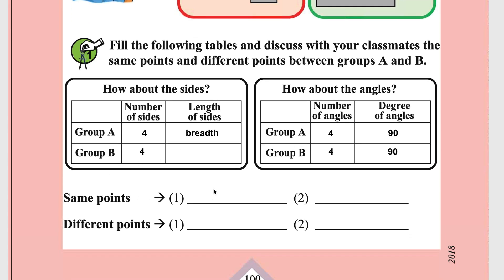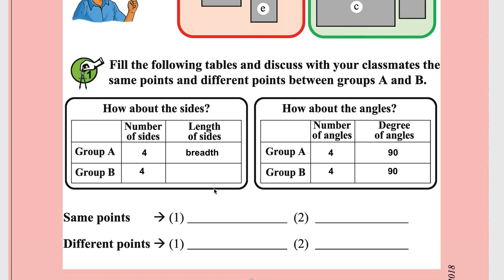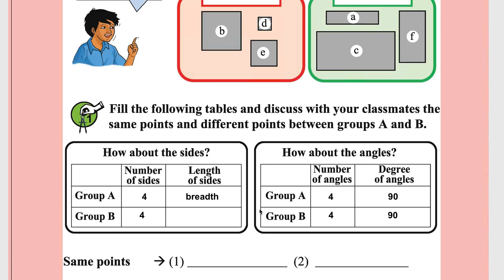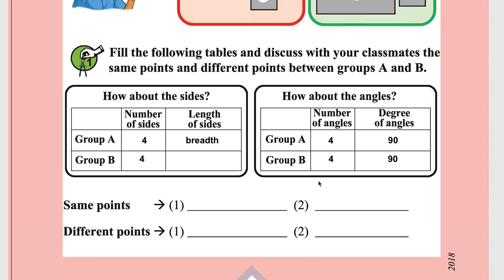What are the same points in both groups? Angles are equal to 90 degrees for both Group A and Group B, and the number of sides is also four. What are the different points? In Group B, length is not equal to breadth — that is the difference.